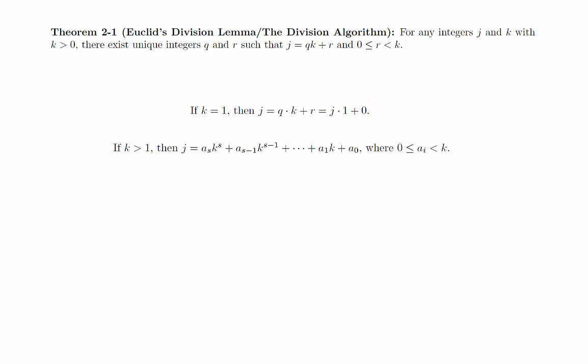We will first use the basis representation theorem to write j in the base k. Notice that we can factor out a k from all but the last term. When we do this, we end up with an expression that's in the exact form we need it to be in.